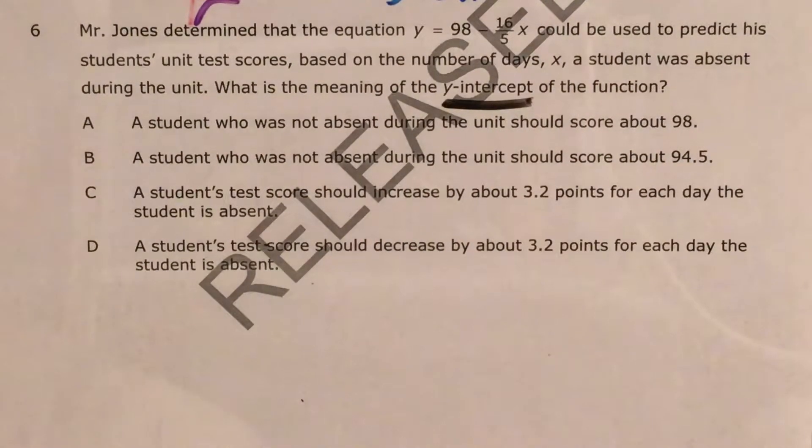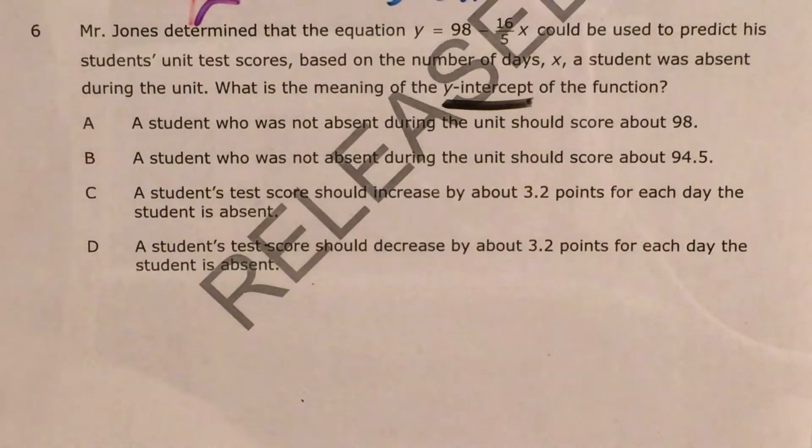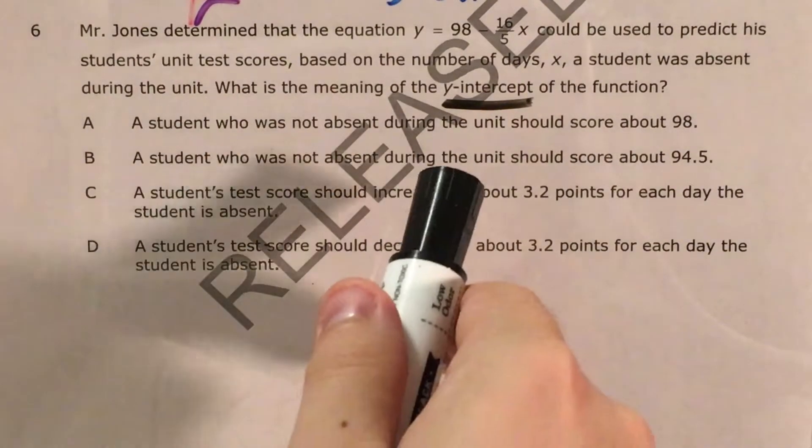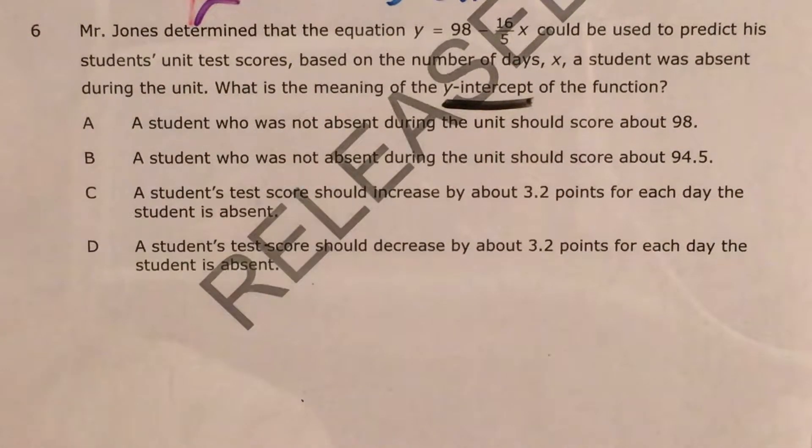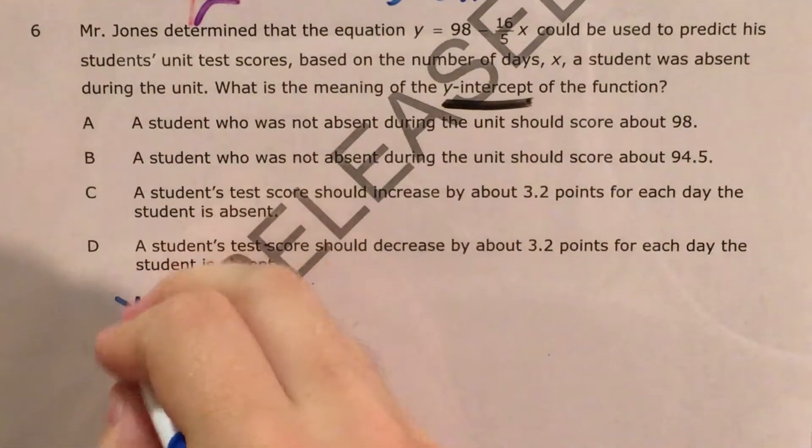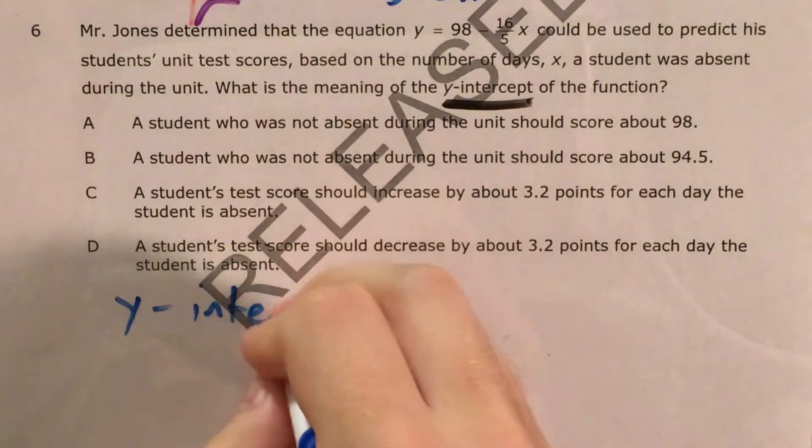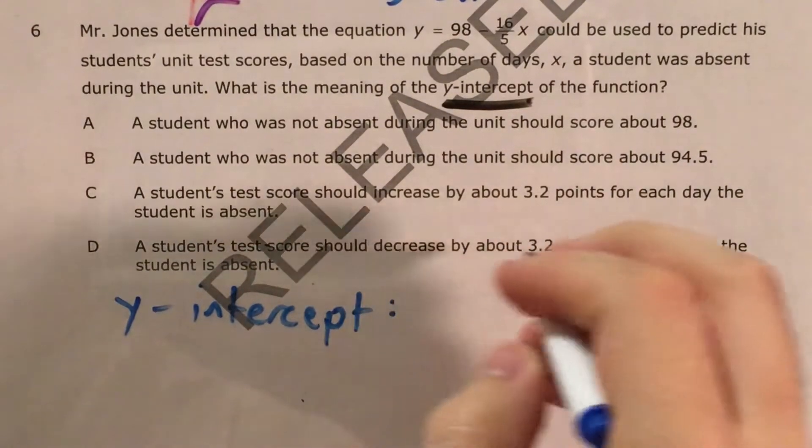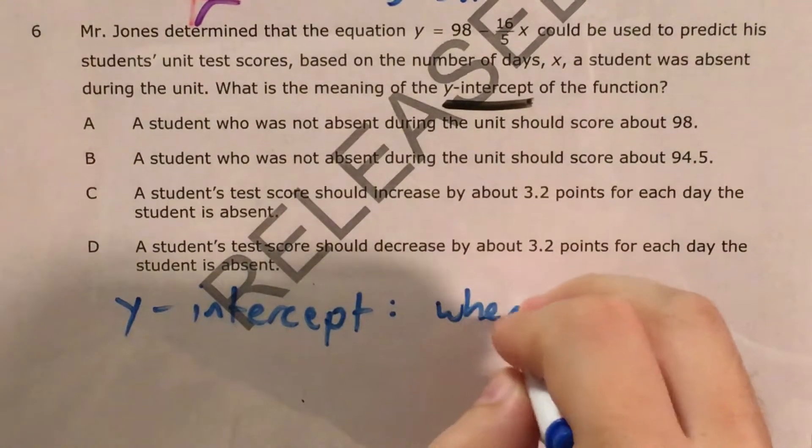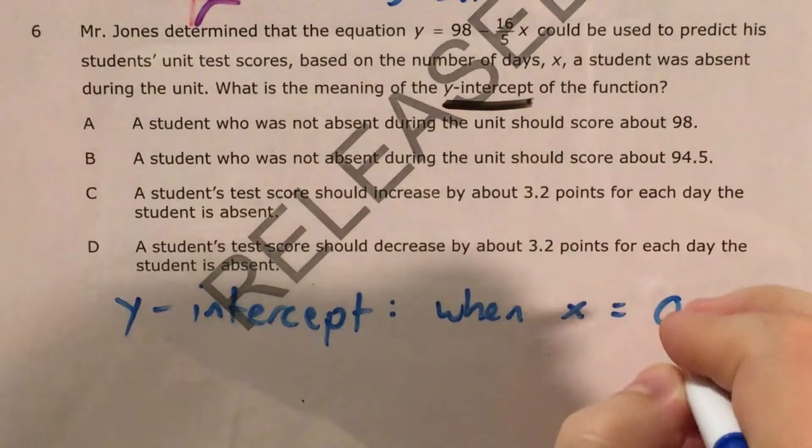Now there was another question earlier in the 8th grade math section where I went over y-intercept in terms of a graph. In terms of a word problem, the key to our y-intercept is the y-intercept is whatever happens when x equals 0.